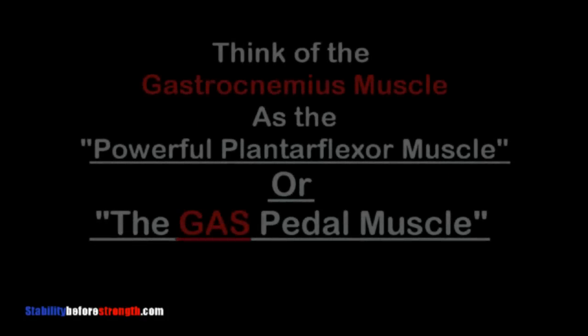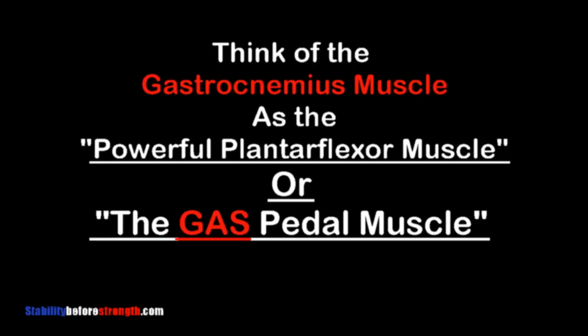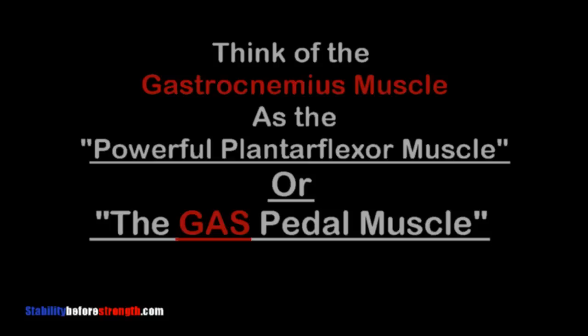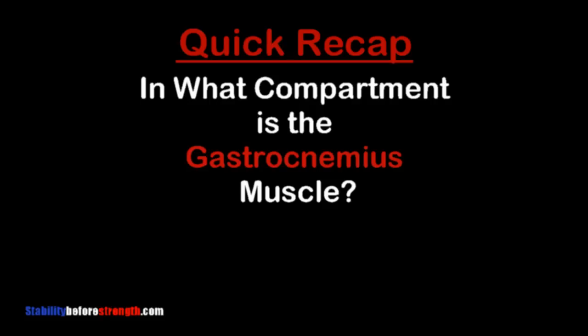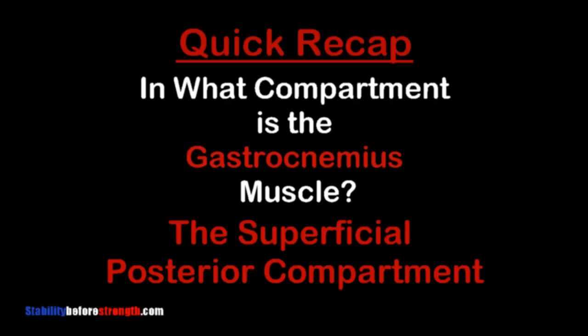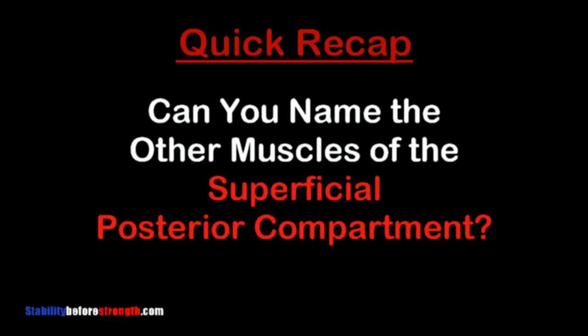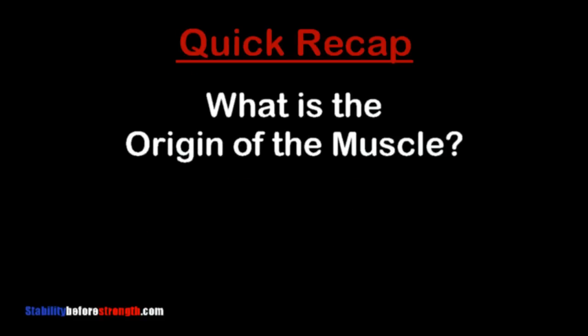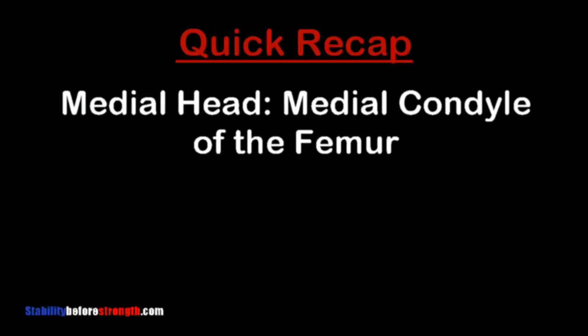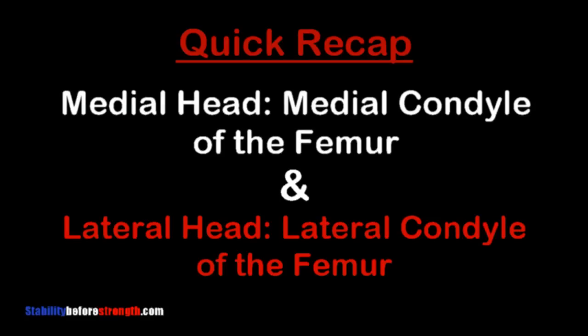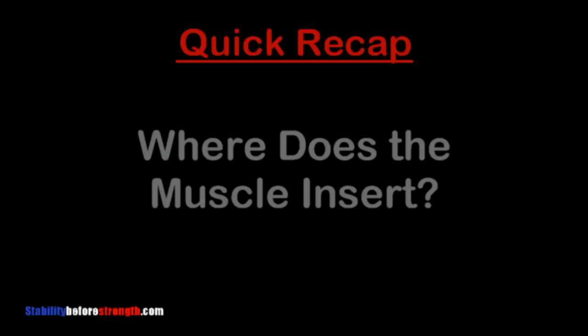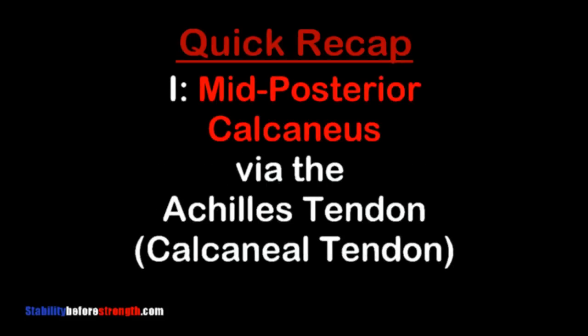We can think of the gastrocnemius as the powerful plantar flexor muscle — but don't forget it also performs flexion of the knee. Let's quickly recap: the gastrocnemius is located in the superficial posterior compartment, alongside the soleus and plantaris. It originates via its medial head at the medial condyle of the femur and via its lateral head at the lateral condyle of the femur, and it inserts into the mid posterior calcaneus via the Achilles tendon.